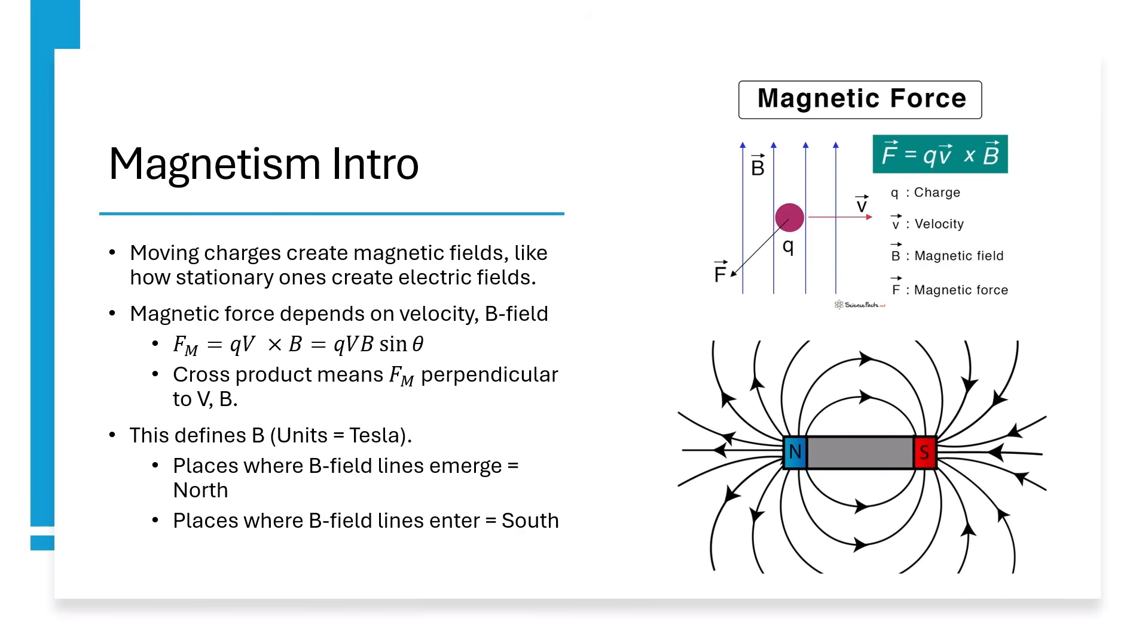Magnetic north is defined as where B-field lines emerge, and south is where B-field lines enter. Every magnet has a north and a south. Magnetic monopoles do not exist.